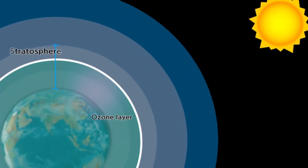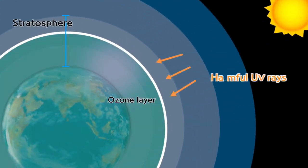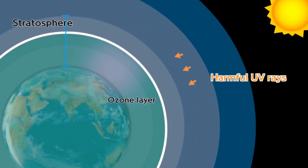It's a very important layer because it contains the ozone layer, which absorbs harmful UV radiation from the sun.